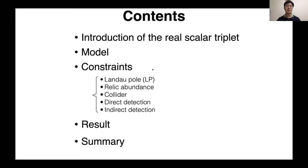At first, I'll talk about the motivation and the model of real scalar triplet and explain several constraints, including Landau pole, relic abundance, collider, direct detection, and indirect detection. Finally, I'll summarize the results.